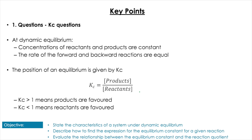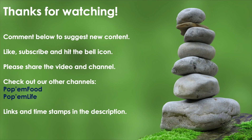To recap: a dynamic equilibrium is one where the concentrations of reactants and products stay constant, the rate of the forward reaction equals the rate of the backwards reaction, and the system is closed. We write Kc as concentration of products divided by concentration of reactants. Large values of Kc indicate products are favored; very low values indicate reactants are favored. Make sure you practice writing the Kc expression, and remember — practice makes slightly better!